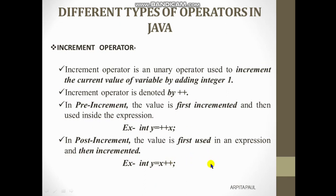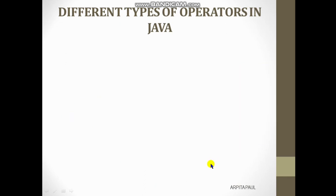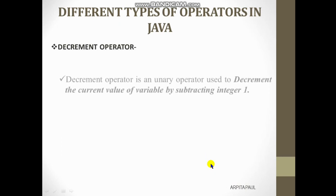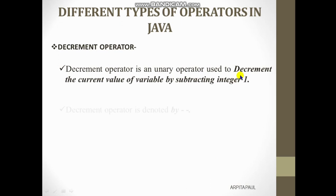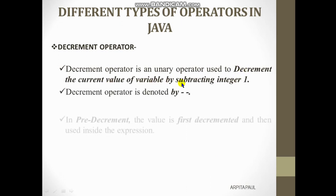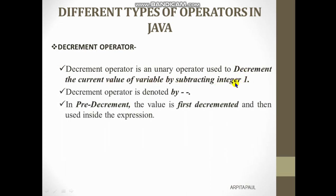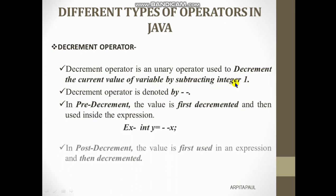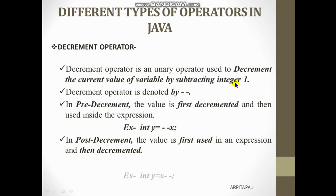Now coming to the next operator, which is the decrement operator. It is similar to the increment operator, but it is used to decrement the current value of a variable by subtracting integer 1. It decrements the value of the variable by 1 only, and it is denoted by the minus-minus (--) sign.